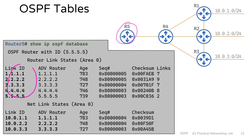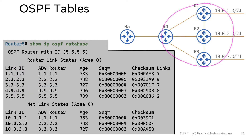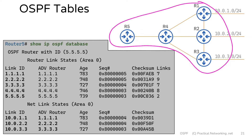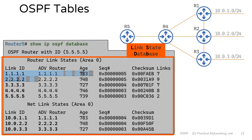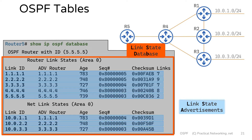Router 5 knows about five different routers: itself, and routers 1, 2, 3, and 4, also in this topology. Every router knows about every other router in the topology, as you can see in the output of show IP OSPF database. Router 5 also has additional LSAs correlating to the three networks in this topology, each being advertised by routers 1, 2, and 3. The whole thing is the LSDB, and each of these individual entries in the LSDB are referred to as an LSA.